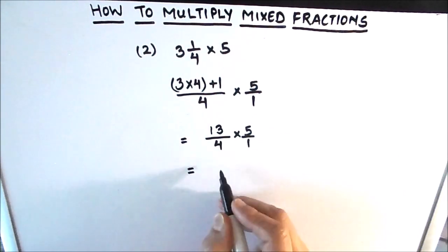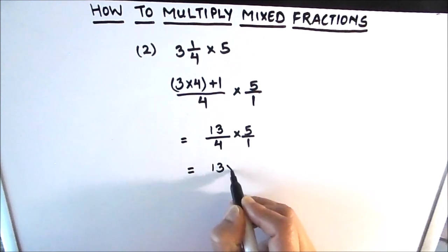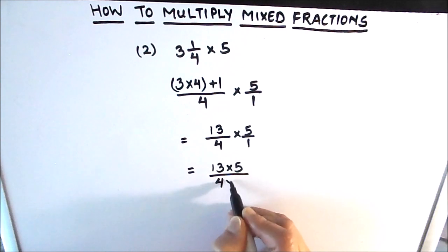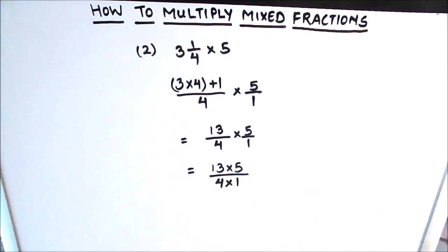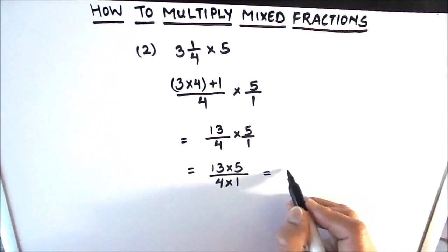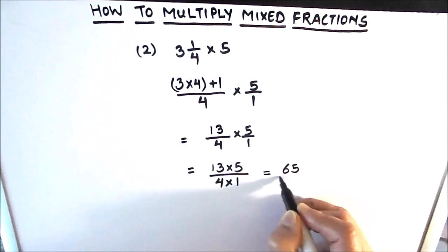We now have two improper fractions. The numerator of one fraction gets multiplied with the numerator of the other, and the denominator with the denominator. So we get 13 times 5, divided by 4 times 1. Before multiplying, we check for any common factor between the numerator and denominator. There is no common factor here, so we can directly multiply.